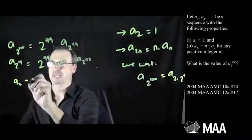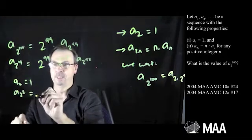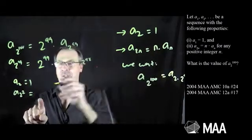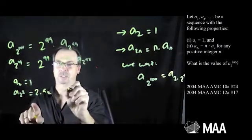For example, a₂ is definitely 1. a₂ squared, that's a₄, that's 2 times 2, so it would be 2 times a₂, which is just 2.